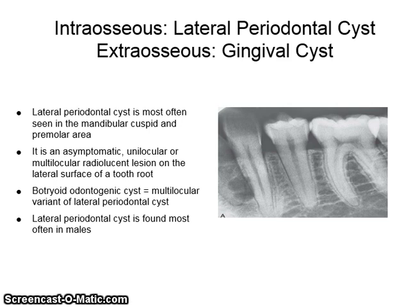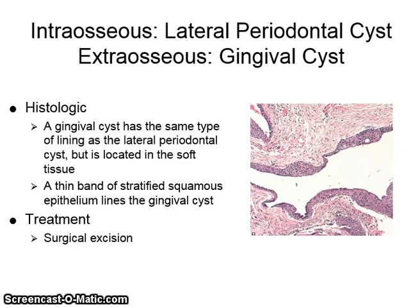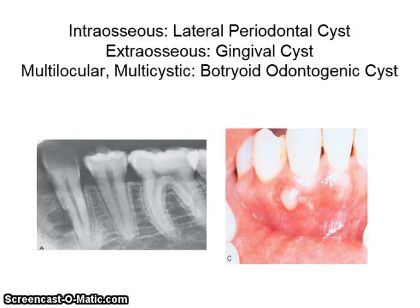Lateral periodontal cysts are mostly found in males. The gingival cyst has the same type of lining as the lateral periodontal cyst, but is located in the soft tissue. Histologically, it shows a thin band of stratified squamous epithelium lining the gingival cyst. The treatment is surgical excision. The radiograph on the left shows a botryoid odontogenic cyst, and the image on the right shows a gingival cyst.